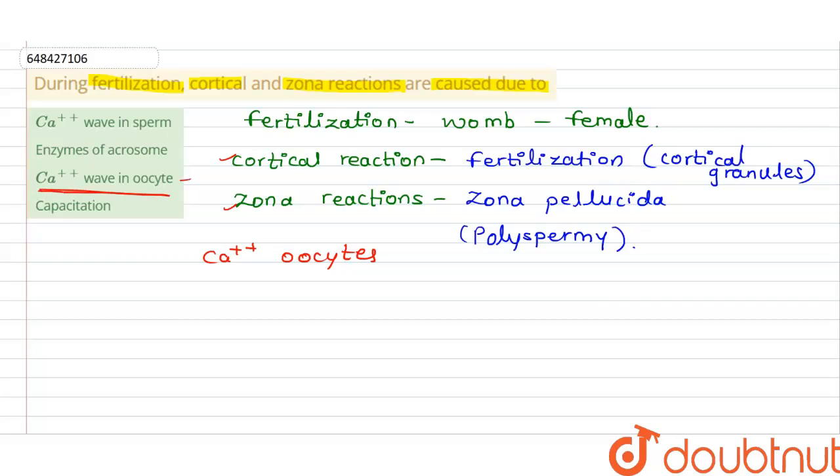So this cortical and zonal reaction will take place according to option number three, that is calcium plus plus wave in oocyte, not the calcium plus plus in sperm, and the enzyme of acrosome, no.